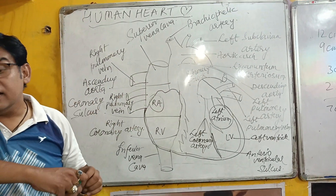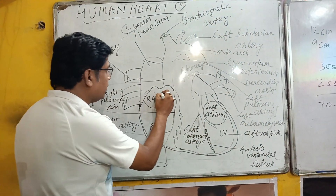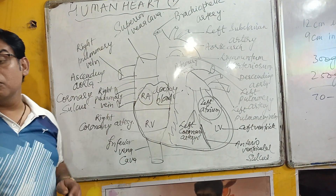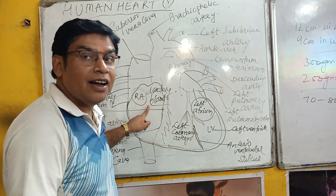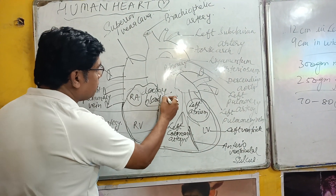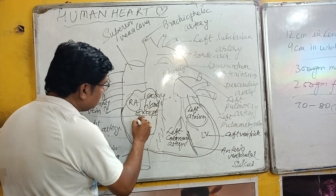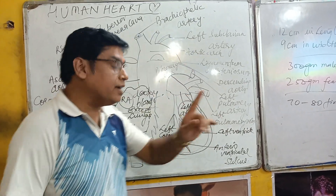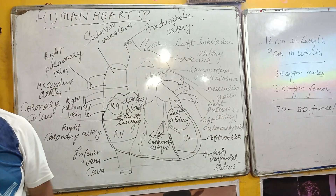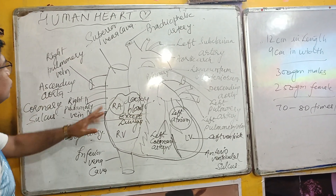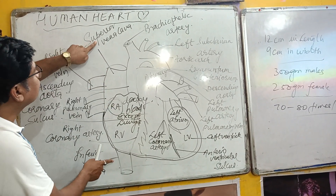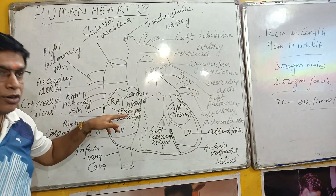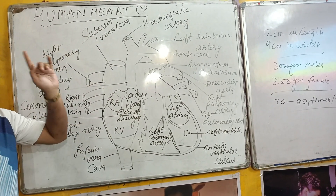The right auricle receives deoxygenated blood from all parts of the body except the lungs, through the superior vena cava and the inferior vena cava. The blood from these two vessels is received into the right auricle.